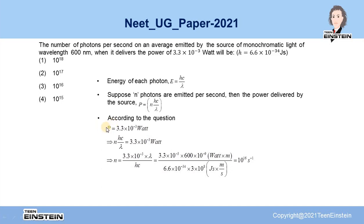Now, if we put the value of P from here, nHc/λ, and then solve for n by putting the value of λ, H and C, λ is given 600 nanometer,